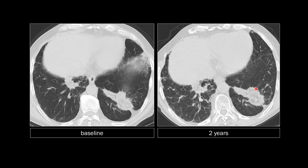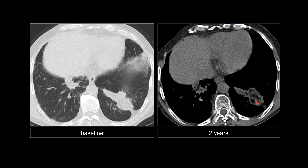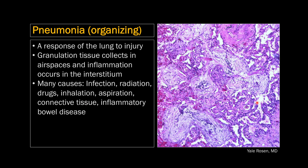Here's another example that looks more speculated. These are often confused as lung cancers initially, but on follow-up they don't get much bigger, and on soft tissue windows they show fat. Organizing pneumonia is a response the lung has to certain injuries — infection, radiation, drugs, and others — and sometimes it's difficult to identify the inciting event. Pathologically, granulation tissue collects in the air spaces with inflammation in the surrounding interstitium.